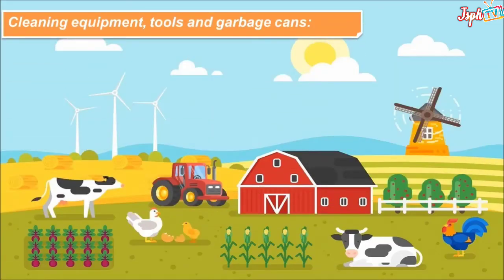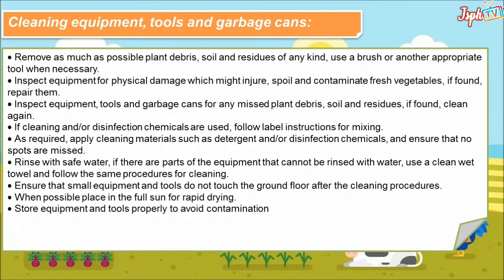For cleaning equipment, tools, and garbage cans: remove as much as possible plant debris, soil, and residues of any kind — use a brush or another appropriate tool when necessary. Inspect equipment for physical damage which might endure, spoil, and contaminate fresh vegetables; if found, repair them. Inspect equipment, tools, and garbage cans for any remaining plant debris, soil, and residues; if found, apply cleaning or disinfection chemicals and follow label instructions for mixing. Apply cleaning materials such as detergent and/or disinfection chemicals, ensuring no spots are missed. Rinse with safe water. For parts that cannot be rinsed with water, use a clean wet towel and follow the same procedures. Ensure small equipment and tools do not touch the ground after cleaning. When possible, place in full sun for rapid drying. Store equipment and tools properly to avoid contamination.